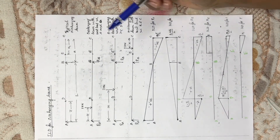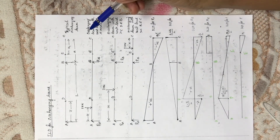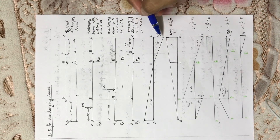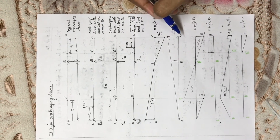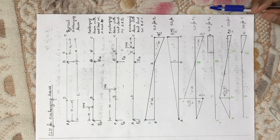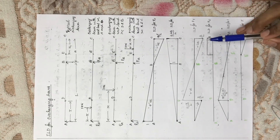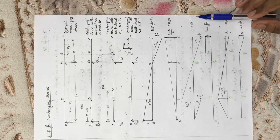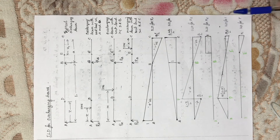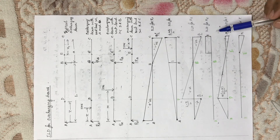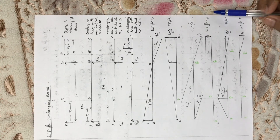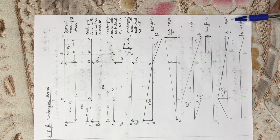So, we have now obtained the various influence line diagrams — for reaction Ra, reaction Rb, shear force at point D, shear force at E, bending moment at D, and bending moment at E.